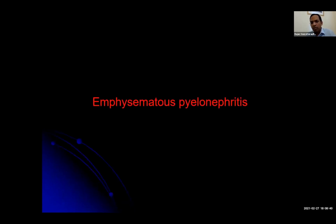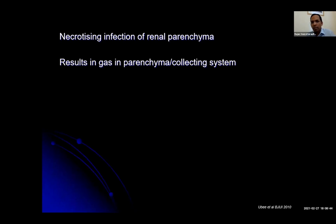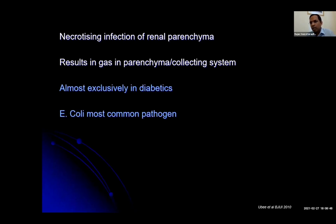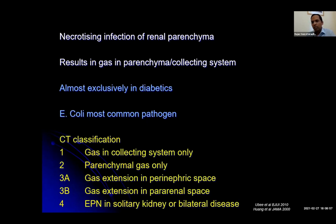Moving on to emphysematous pyelonephritis. This is a necrotising infection of the renal parenchyma resulting in gas in the parenchyma and collecting system. It's almost exclusively seen in diabetics, and E. coli is the most common pathogen. There is a CT-based classification published about 20 years ago from a study of 48 patients, which correlated clinical findings with outcomes: grade 1 is gas in the collecting system only; grade 2 is parenchymal gas only; grade 3 is involvement of the perinephric and pararenal space; and grade 4 is bilateral involvement. As the grade increases, antibiotics alone may not be enough.